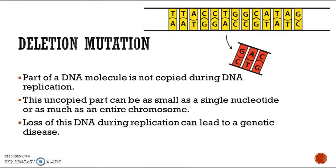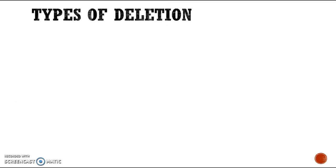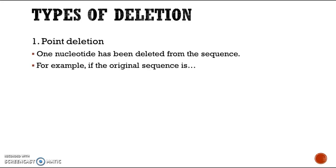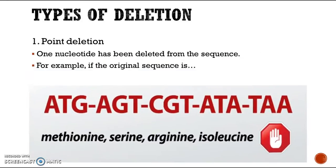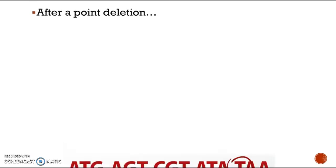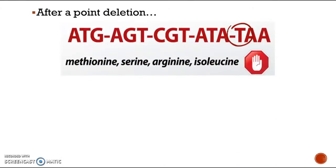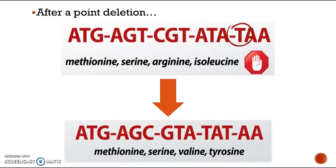Deletion mutation is when part of a DNA molecule is not copied during DNA replication. The first type is point deletion, where one nucleotide has been deleted from the sequence. For example, if the original sequence is as shown, after a point deletion where base T has been deleted, the new amino acid sequence is altered.